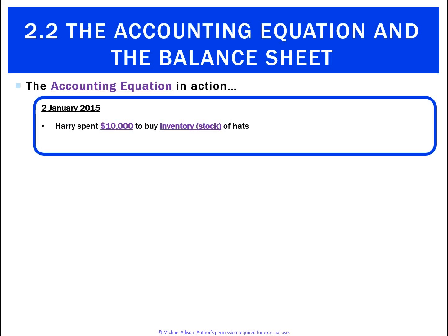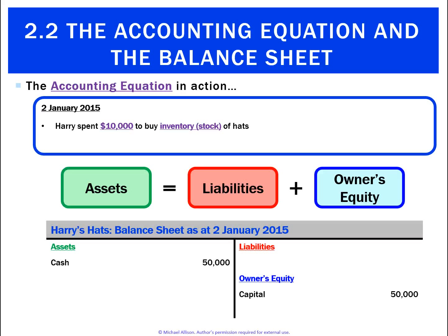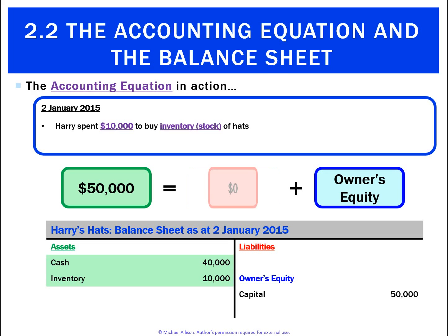On the 2nd of January, Harry spent $10,000 to buy inventory of hats. We need to update the balance sheet with this transaction. First, we'll have $10,000 of inventory, but the balance sheet is now out of kilter — the left-hand side has $60,000 and the right-hand side has $50,000. The other effect is that cash goes down from $50,000 to $40,000. Now assets are $50,000, liabilities are zero, and owner's equity is $50,000 — the two sides balance.